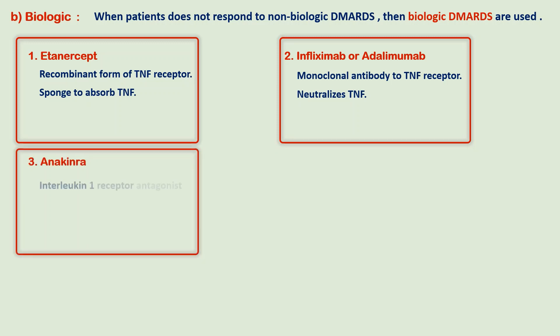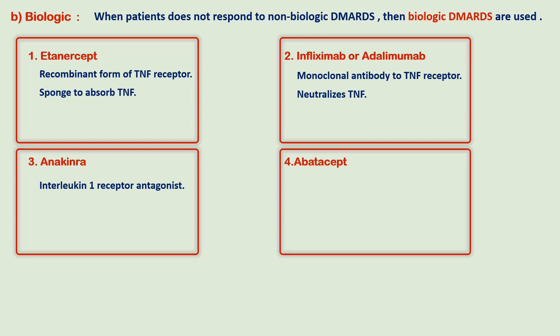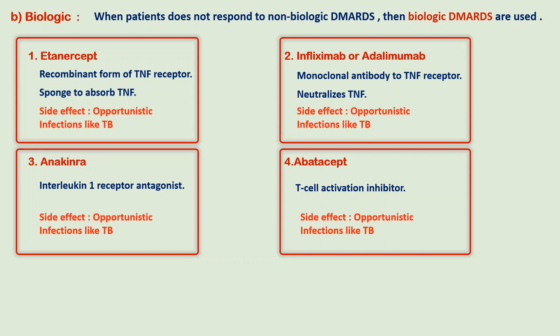Anakinra is an interleukin-1 receptor antagonist. Finally, abatacept is a T-cell activator inhibitor. All of these biological DMARDs share a common side effect: they cause opportunistic infections like tuberculosis because these drugs suppress the immune system. That concludes the discussion of drugs used for rheumatoid arthritis.